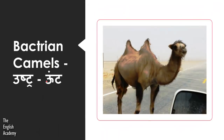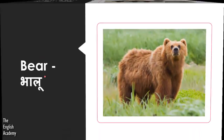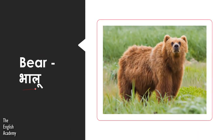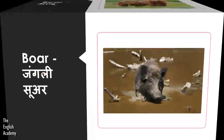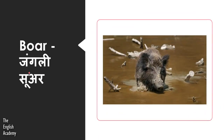Let us see the next animal. Ustr or Oont — this is Bactrian Camel. Next animal is Bhalu, which we call Bear. The next animal is Jungli Suwar — in English, Jungli Suwar is called Boar.